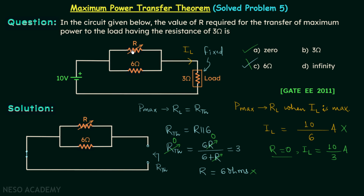Maximum power will be delivered to RL when R equals 0 — option A is correct. When R equals 0, the resistor is short-circuited, so no current flows through the 6-ohm resistor and all current flows through the load, making I_L equal to 10 divided by 3, which is maximum. The Case 1 result is not valid when we have a fixed load and variable source. The statement for case number 2 is: whenever we have a fixed load and the source resistance is variable, maximum power will be transferred to the load when the source resistance is 0, or as minimum as possible.